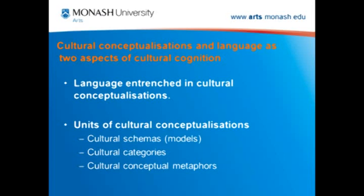There are two aspects to cultural cognition in this model: cultural conceptualizations and language, which are very closely related. Language is deeply entrenched in cultural conceptualizations. The units of cultural conceptualizations include cultural schemas — which in cognitive anthropology are called cultural models — as well as cultural cognitive categories and cultural conceptual metaphors.